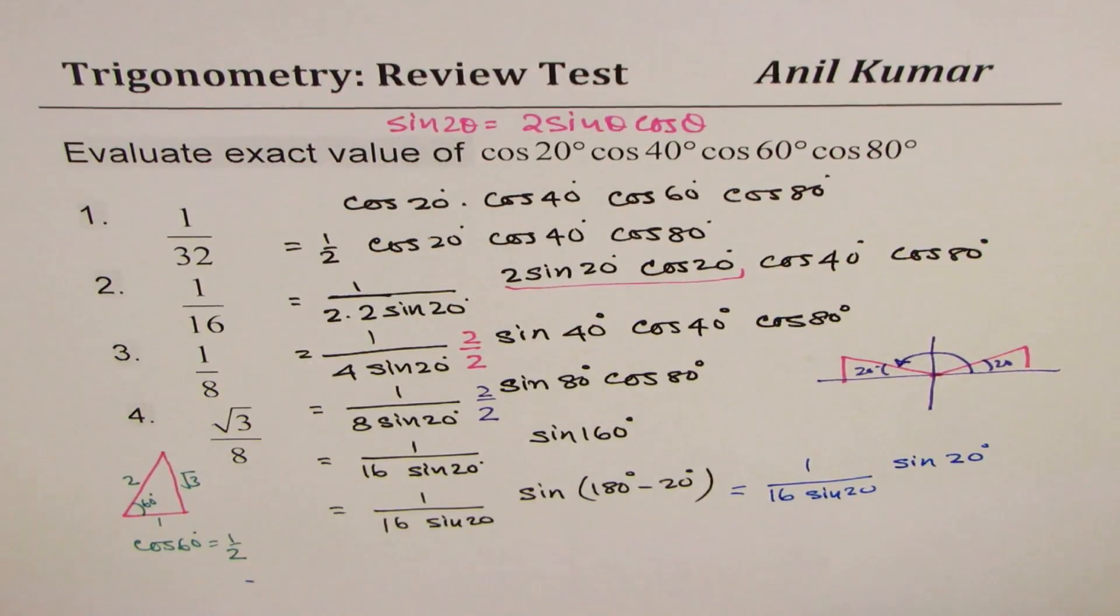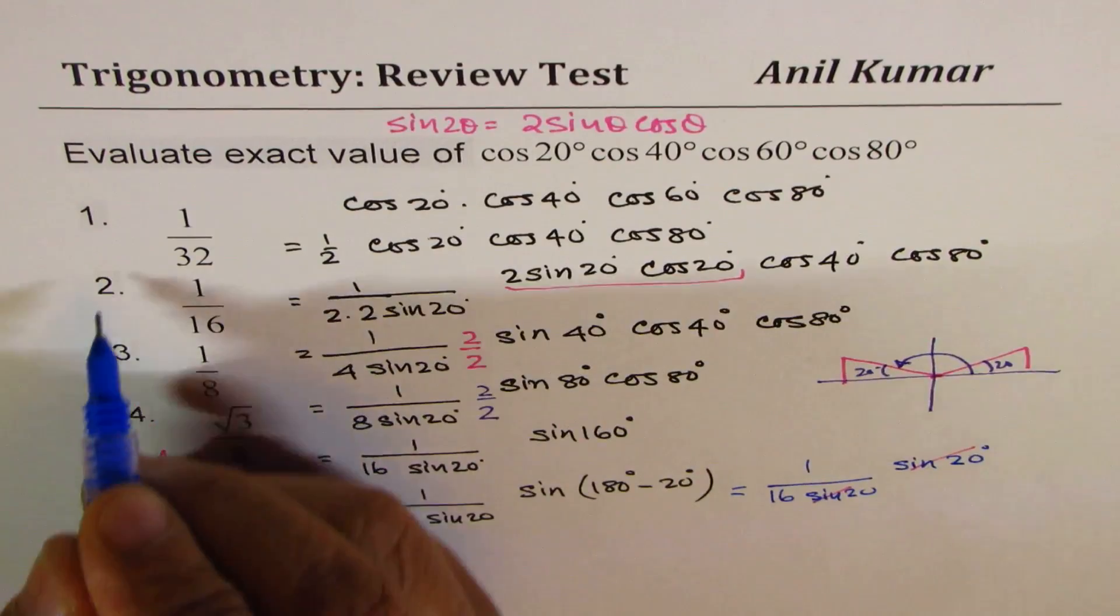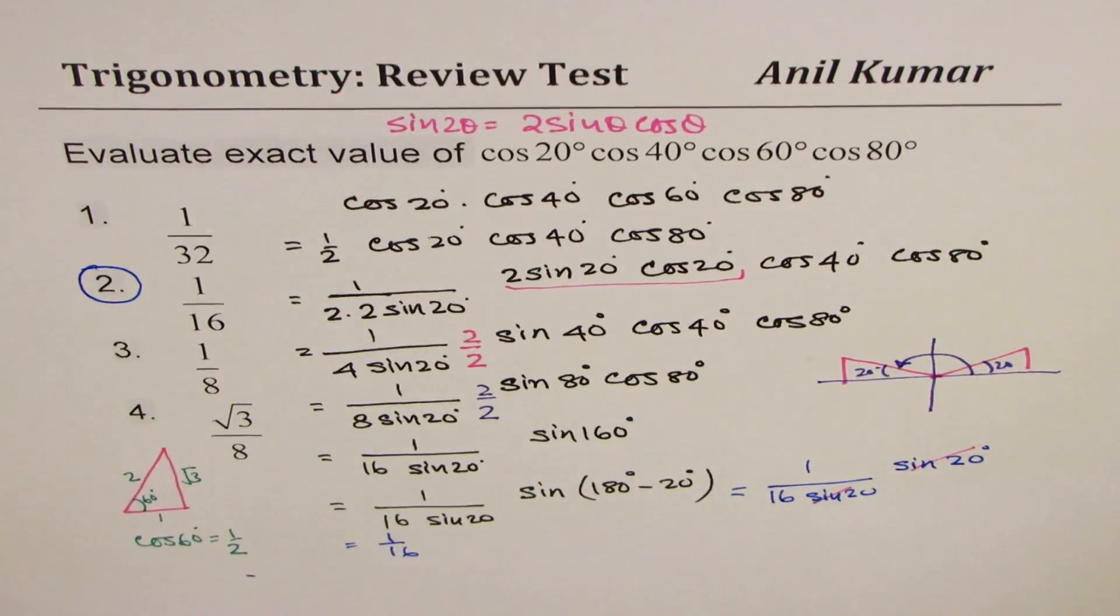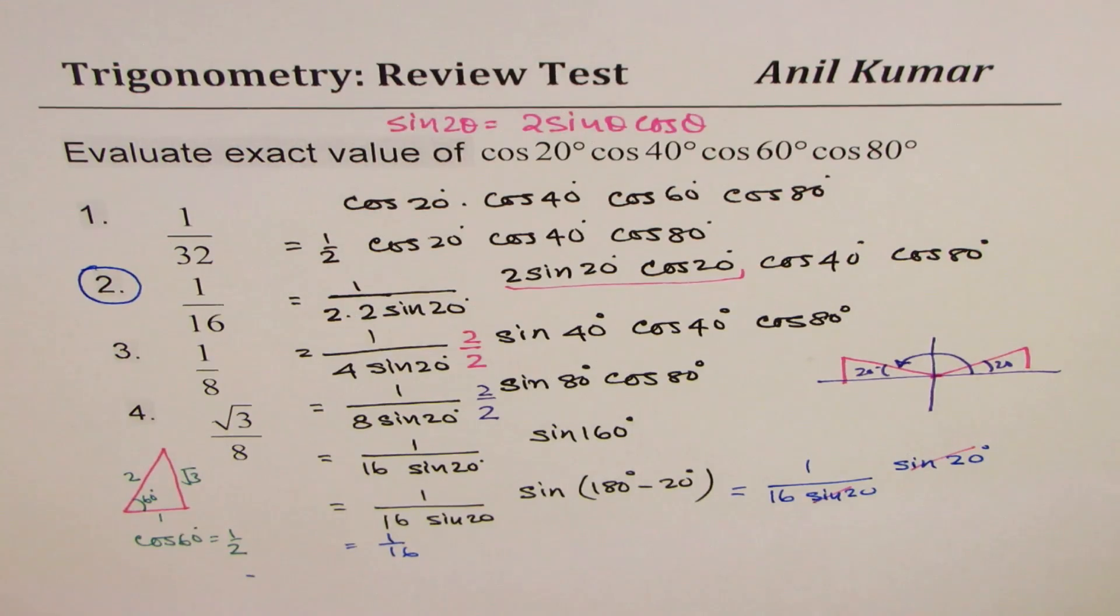So we have 1 over 16 sine 20° and that is also sine 20°. We can cancel these off leaving us with 1 over 16. So 1 over 16 is indeed the correct answer. That is how you could figure it out.